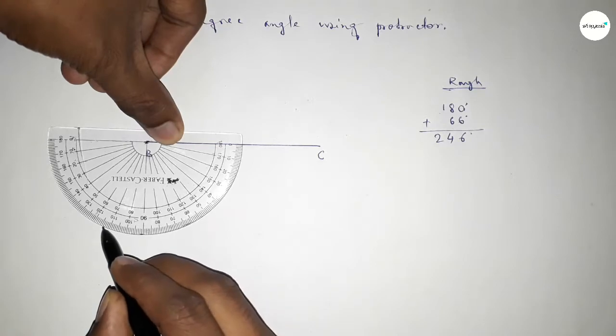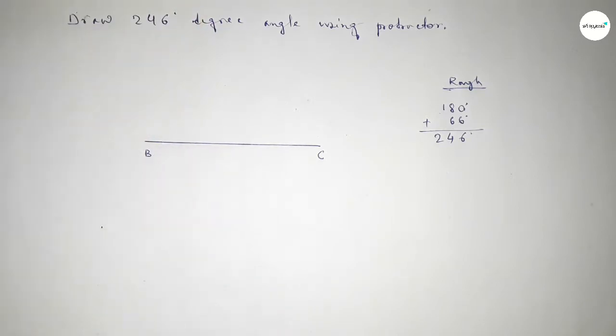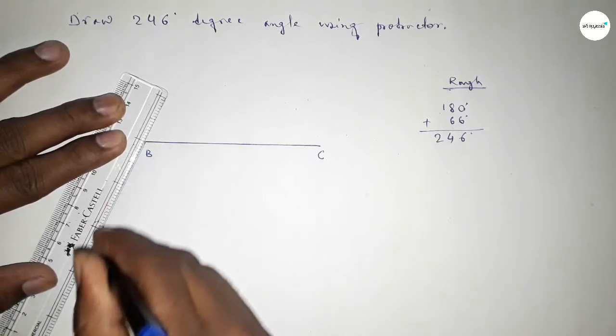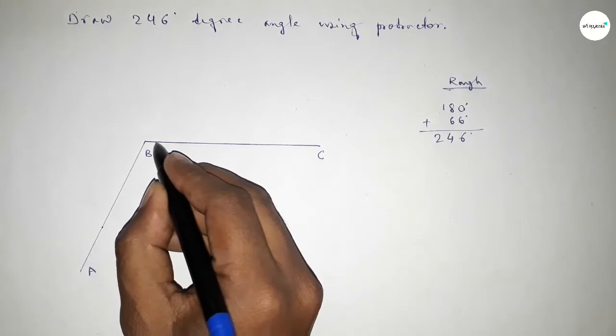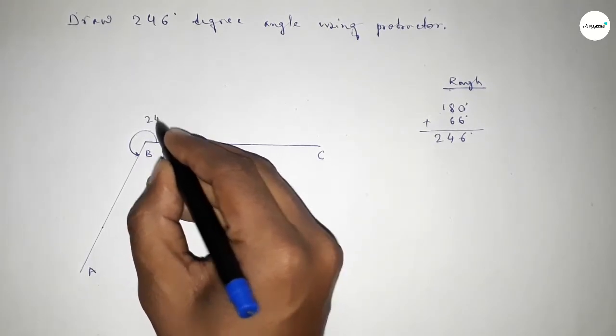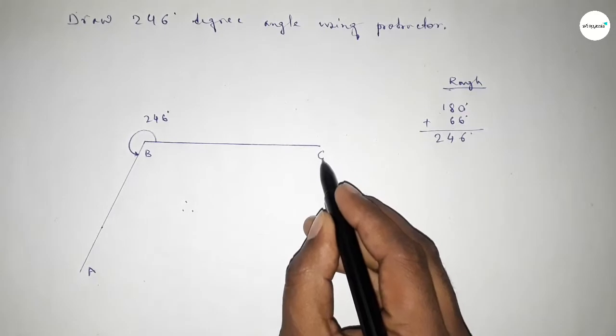By adding 66 degrees to 180 degrees, we get 246 degrees. Now joining this and marking a point here. So angle ABC is 246 degrees.